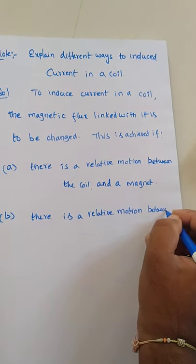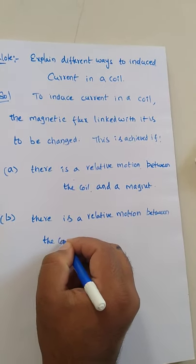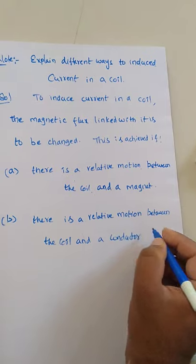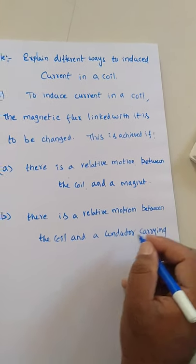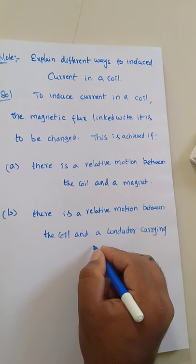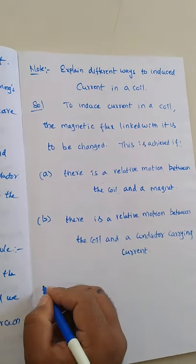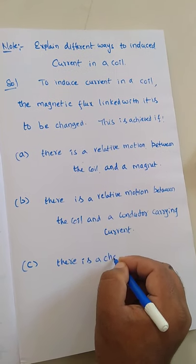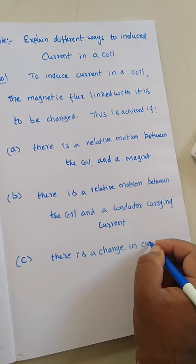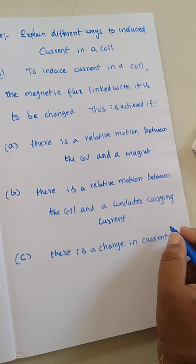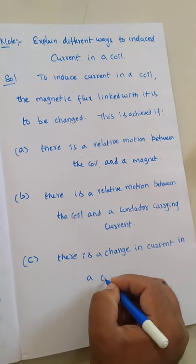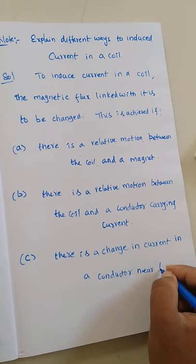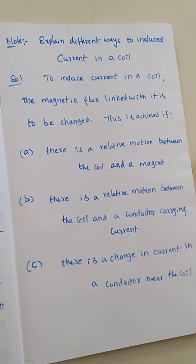Second point: there is relative motion between the coil and a conductor carrying current - relative motion is also required here. Third point: there is a change in current in a conductor near the coil. So these are the three ways current is induced in a coil.